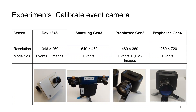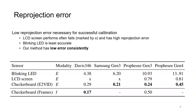We now compare our approach with previously used baselines for calibration. Here, we use four different event camera sensors: the Davis 346, Samsung Gen3, Prophecy Gen3 Atis, and Prophecy Gen4. These sensors cover a wide range of camera resolutions and distortions. We calibrate all four sensors using the blinking LED pattern, LCD screen, and checkerboard methods, and compare the root mean square reprojection error.